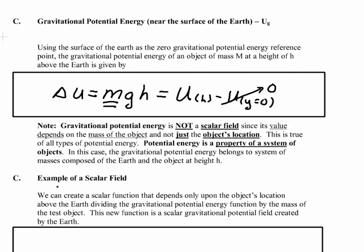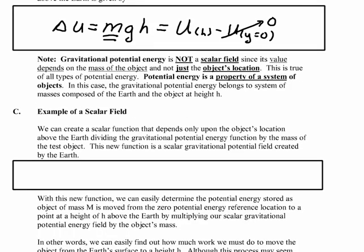Now if you want to convert this to a scalar field, you need to make this so it depends only upon the object's location. We can do this. How we do this is as follows. We take the potential energy function that we have, U, and we divide that by M. And when we do that, we get G and H.